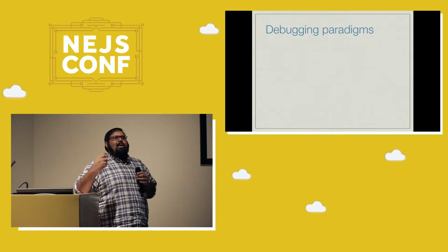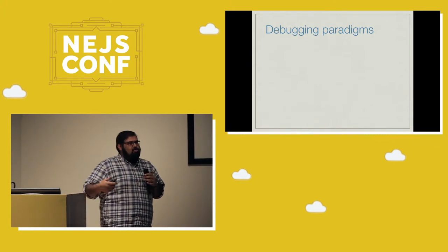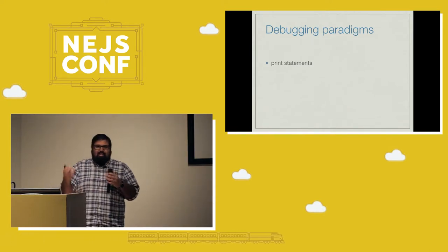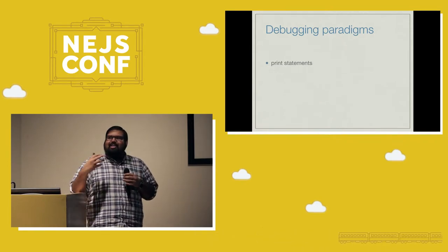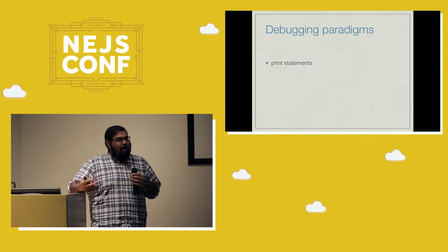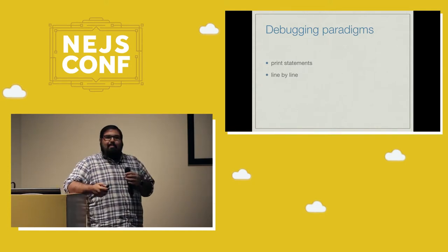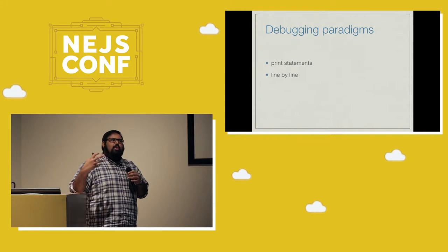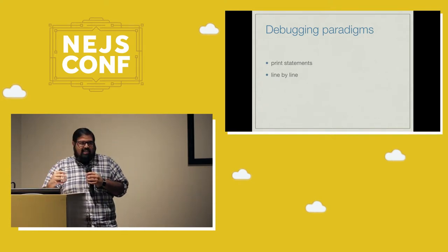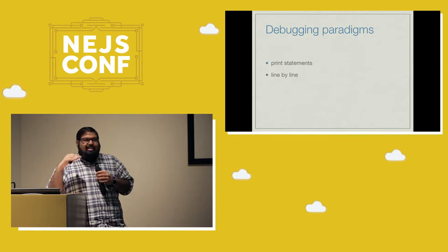There are many different debugging paradigms when it comes to software development as a whole, and we as web developers have stepped through many of these. The first is print statements — basically what we did before with alert — logging out the state of variables. This is probably the easiest to start but also the least powerful. Moving on from there is probably where we all are on a daily basis: line-by-line debugging, where we can stop the world, stop execution at a particular line, inspect variables, see their state, and execute other code at that particular line.